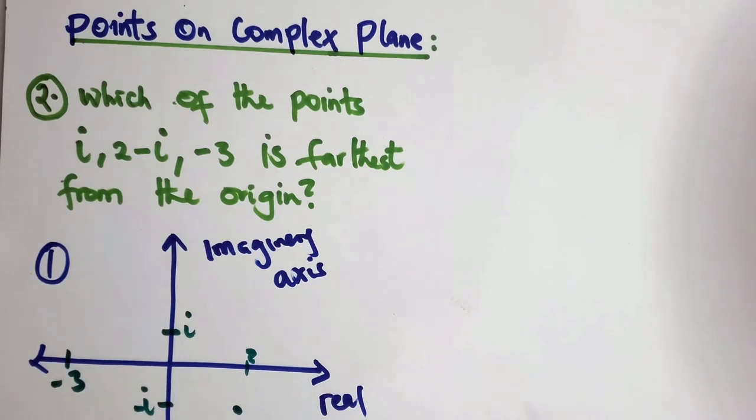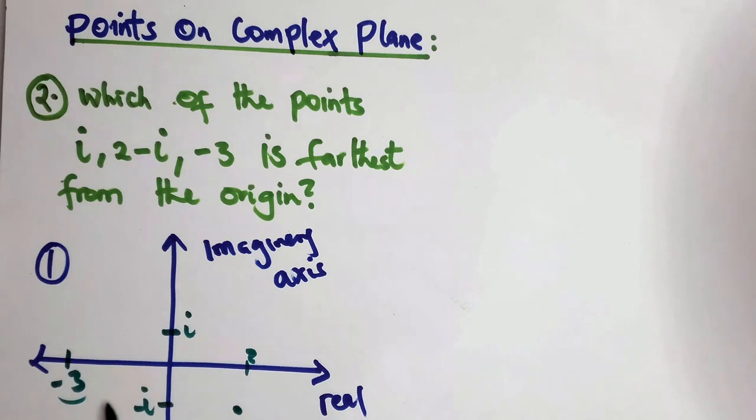Just from the graph, you can see that minus three is the farthest from the origin.